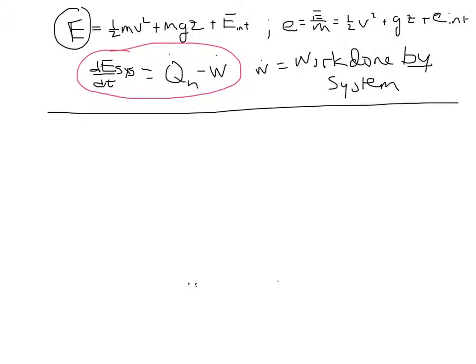And we can then write down our Reynolds transport theorem simply to say that the left-hand side is Q_h, so the rate at which heat is added to our fluid, minus work done by the fluid.